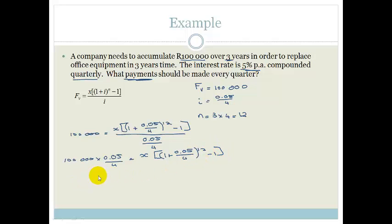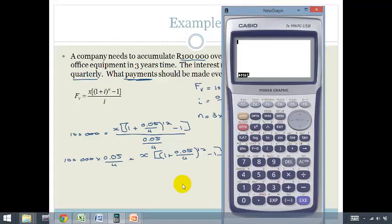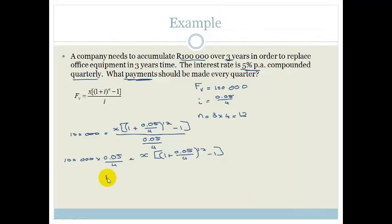So, we can use our calculator now. We've got 100,000 times 0.05 divided by 4 equals 1,250. So, 1,250 is equal to X times by, let's put this in the calculator and see what it gets to.